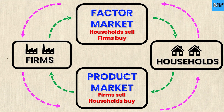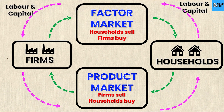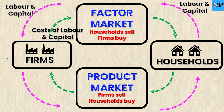Looking at the top right arrow leading into the factor market from households: the factors households provide for firms are the factors of production — namely labor and capital, but also land and entrepreneurship — supplied to firms from households. Firms receive labor and capital from the factor market, and in return they pay for the cost of those factors of production. Households receive these payments in the form of wages and rents. So households are essentially selling labor and capital and receiving wages and rents, while firms are buying labor and capital and paying the costs of those factors.